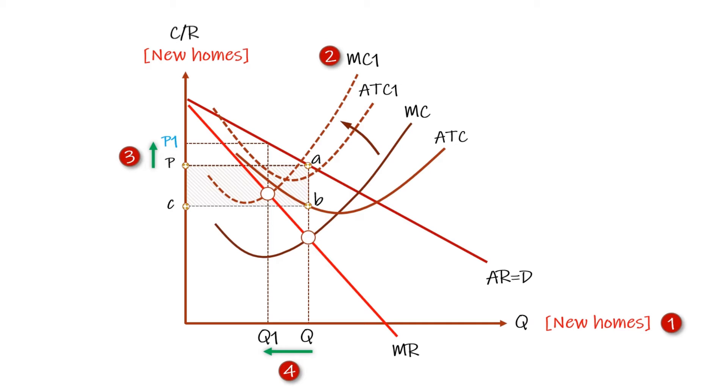The extent of the price increase depends upon the elasticity of demand for houses, reflected in the gradient of the average revenue curve. With a housing shortage, the price elasticity is likely to be inelastic, meaning that most or all of the cost increase is passed on in higher prices.